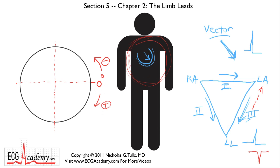Let's review the ECG leads we have in Einthoven's triangle. Lead I goes from right arm to left arm, going straight across. So we draw it in this circle straight across, pointing to zero degrees, and it records any activity going in a horizontal direction.